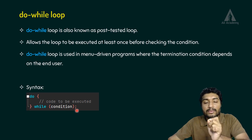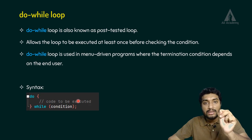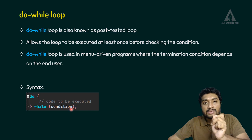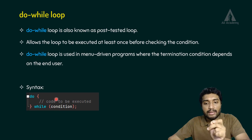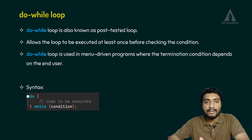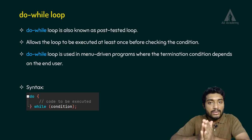We end the while condition with a semicolon. If the condition is true, do it again; check the condition. If it is true, do it again; check the condition. If it is false, exit out of the loop. That is how the do-while loop works.